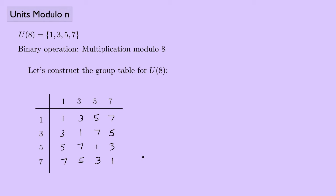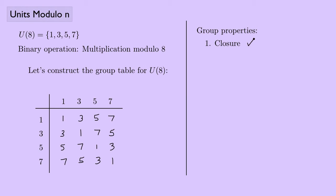Now let's check the group properties. First, closure: the table contains only 1s, 3s, 5s, and 7s, so yes, this is closed. For associativity: U(8) is a subset of Z8, and since Z8 is associative, U(8) is also associative.